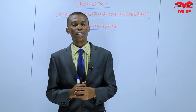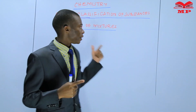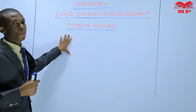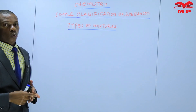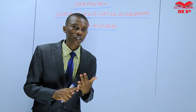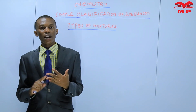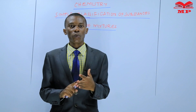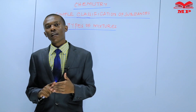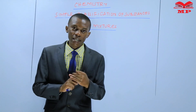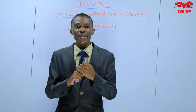In this lesson, I want us to discuss the types of mixtures. We have six types: solid-solid mixture, solid-liquid mixture, solid-gas mixture, liquid-liquid mixture, liquid-gas mixture, and a gas-gas mixture. Those are the six categories of mixtures.